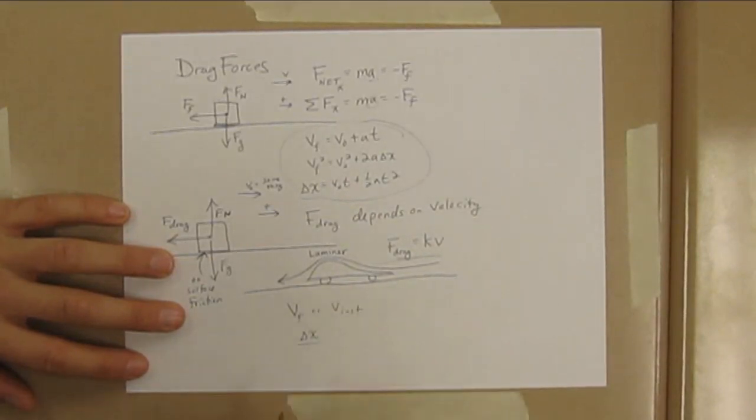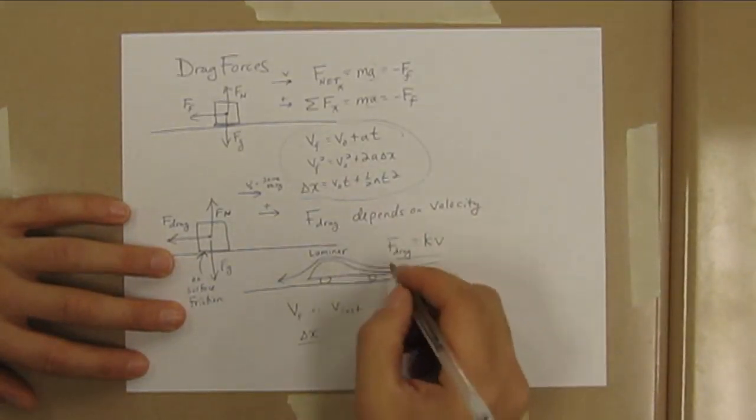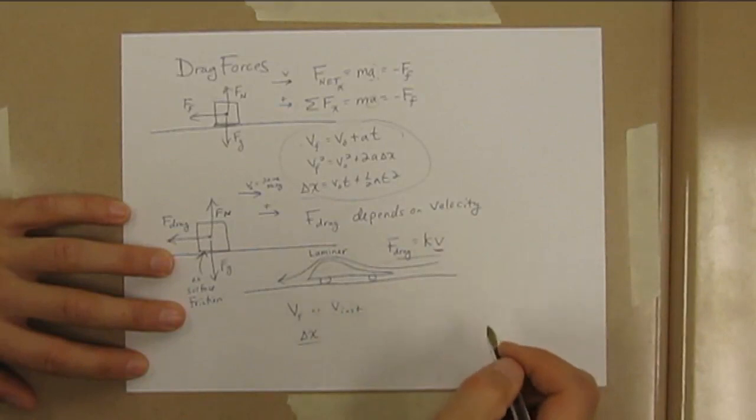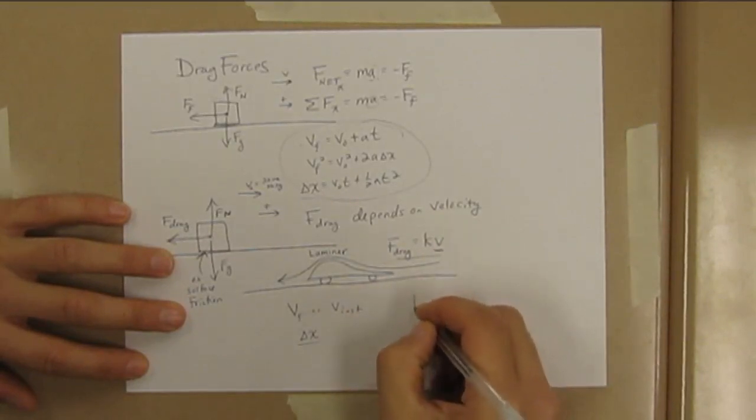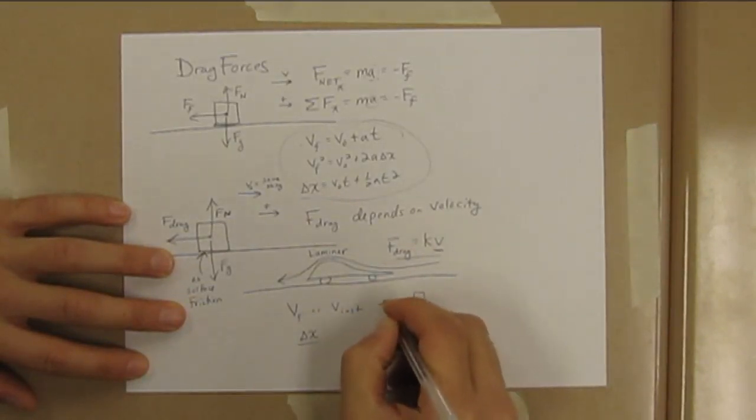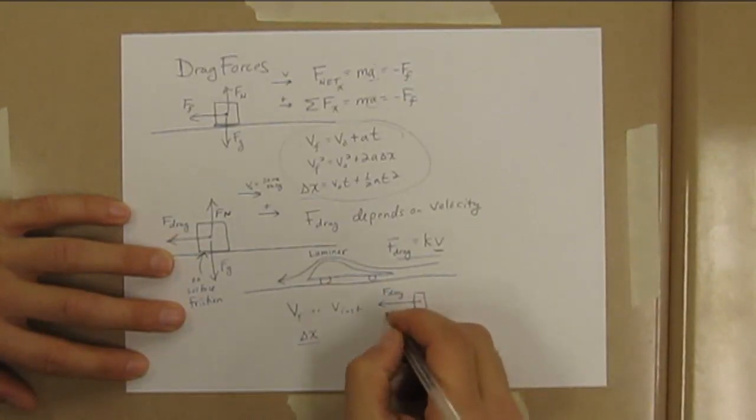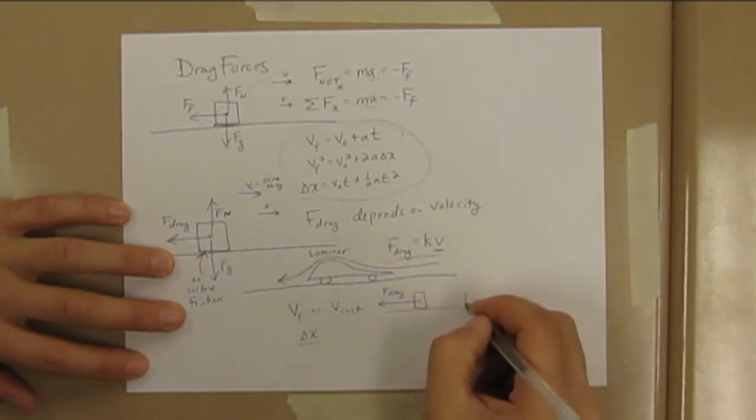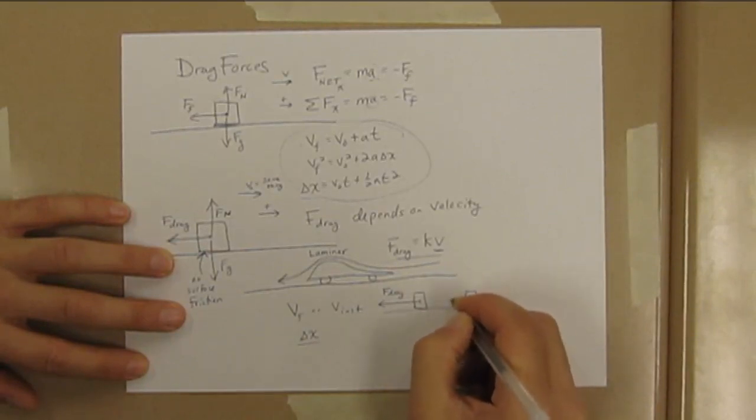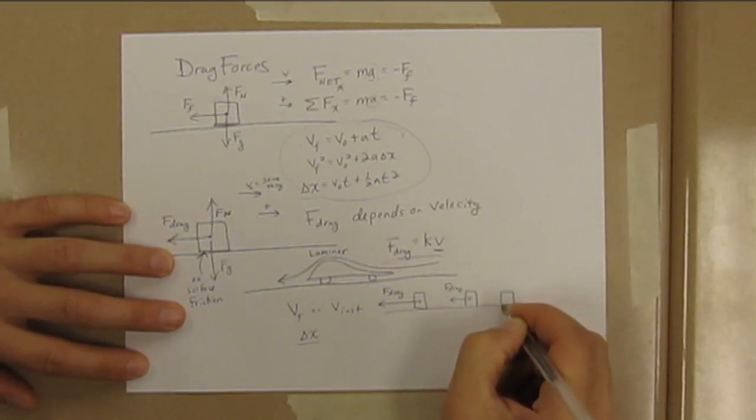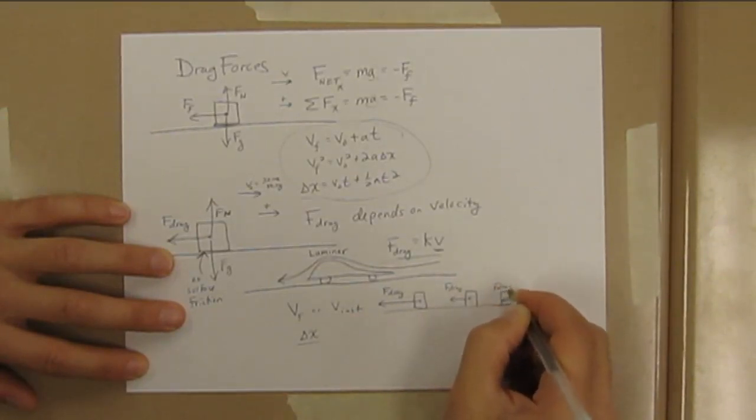We could get the acceleration from our Newton's law equation and then just plug it into a kinematics equation—would be no problem. But here we've got a different situation because the force of drag is changing. The drag force is very large to begin with, and then as it cruises along, it slows down, and as it slows down, the drag force decreases.